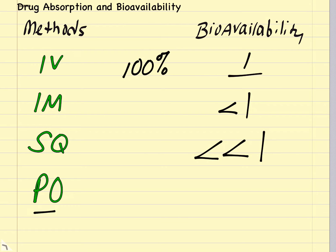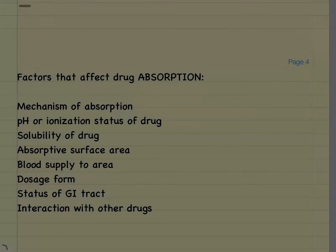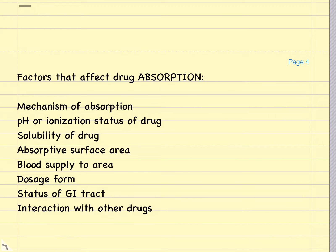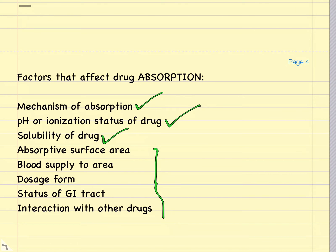It's similar for an oral or PO drug too. That's going to have a bioavailability quite less than one because it has to pass through the membrane of the intestinal tract and also pass through capillary membranes to eventually reach the circulation. I will spend the rest of this video talking about some of the factors that affect drug absorption — the mechanism by which drugs are absorbed through cell membranes, how the pH or ionization status of a drug affects its absorption, and the solubility of a drug.